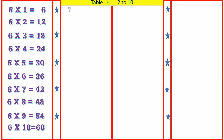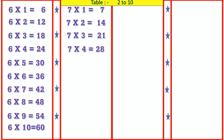7 1's are 7, 7 2's are 14, 7 3's are 21, 7 4's are 28, 7 5's are 35, 7 6's are 42.